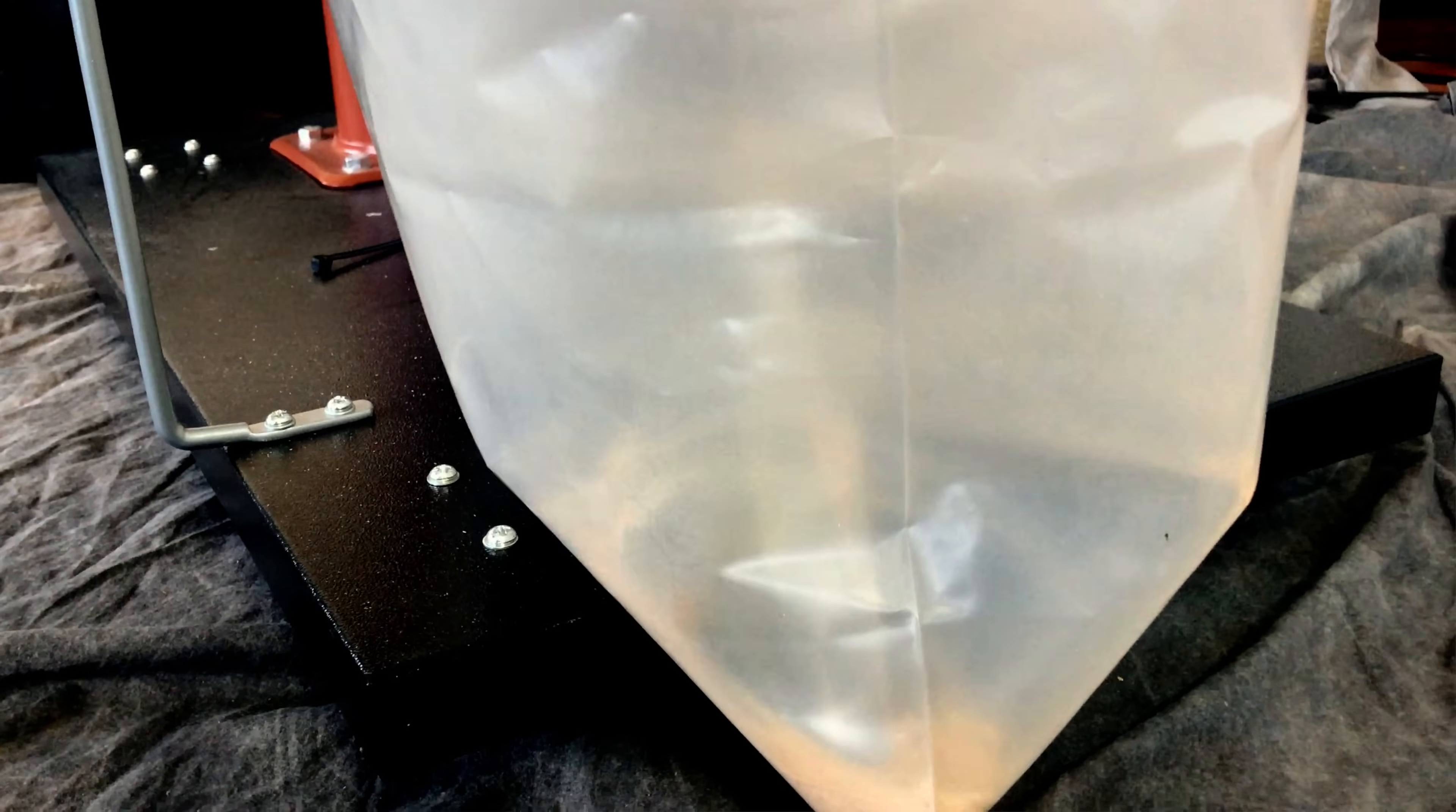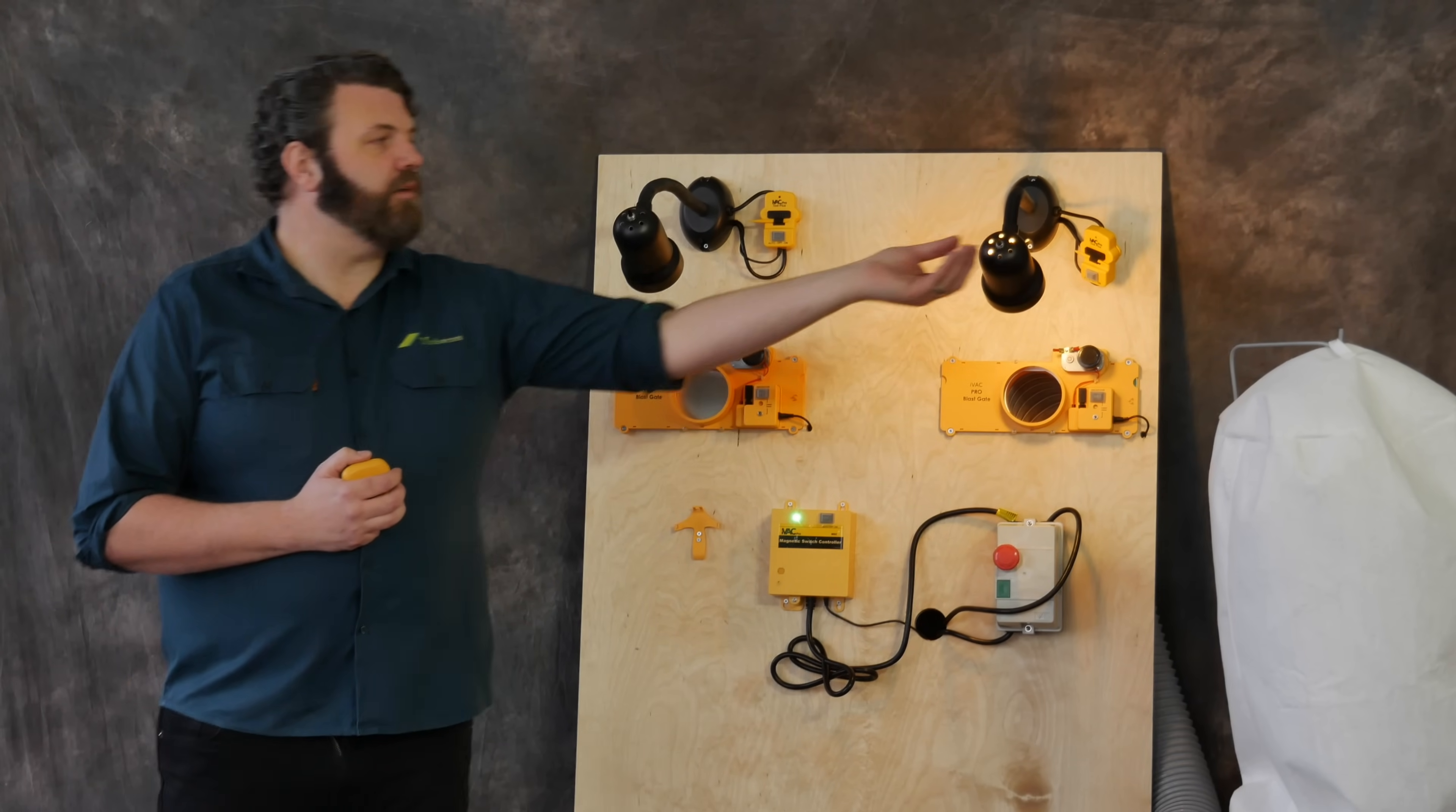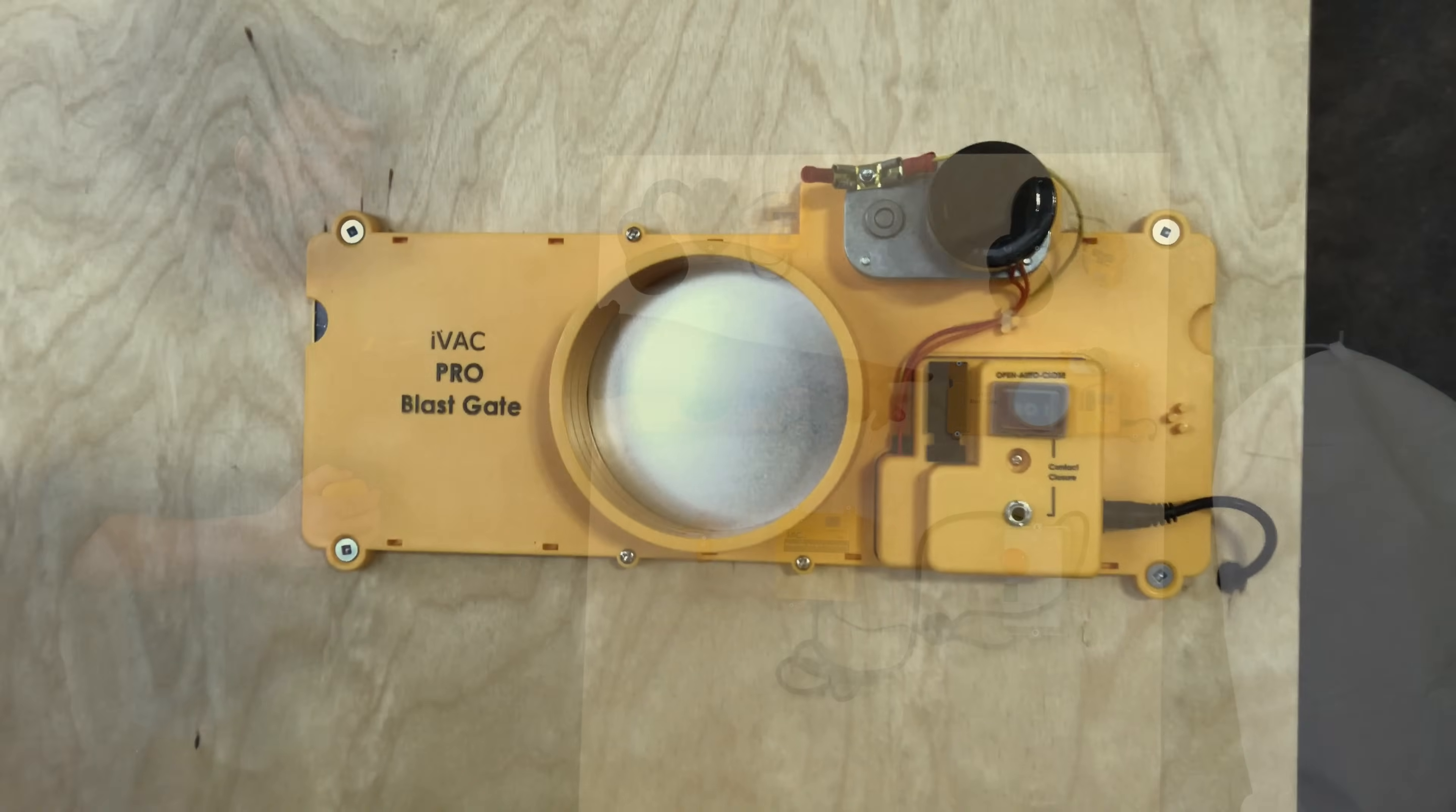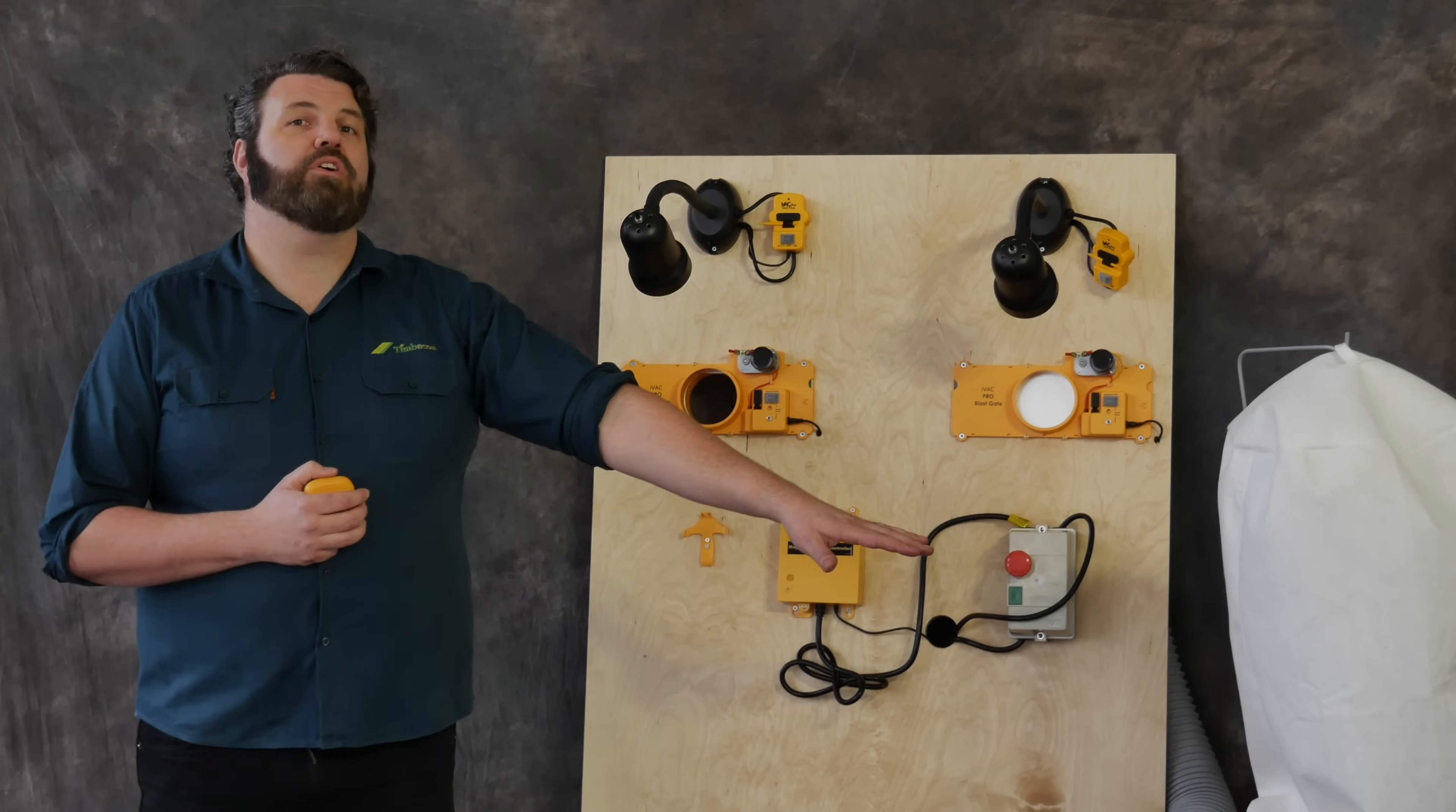Now you've got your blast gate open, you're using your power tool, and you finish using your power tool, so you turn the power tool off again. You'll see here that the blast gate has closed and the dust extractor is now turning off.